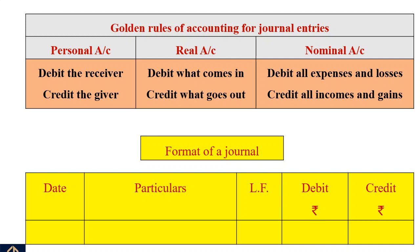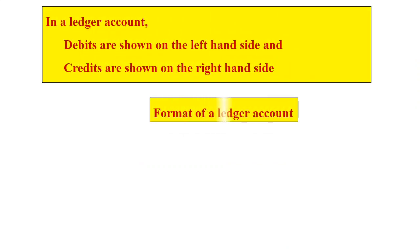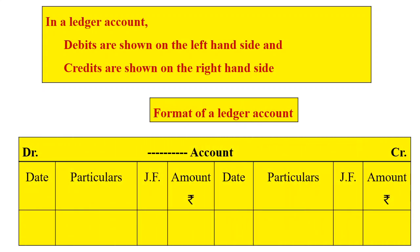Format of a journal: date, particulars, LF (ledger folio), debit, followed by credit. In a ledger account, debits are shown on the left-hand side and credits are shown on the right-hand side.